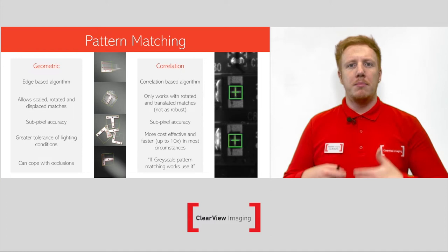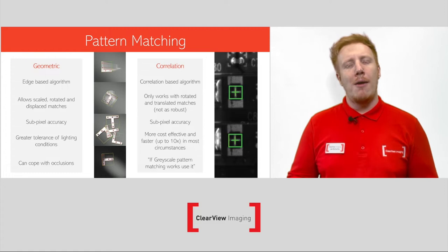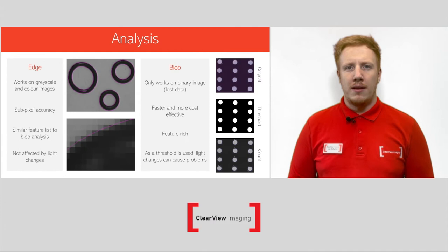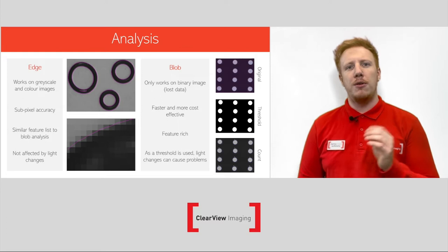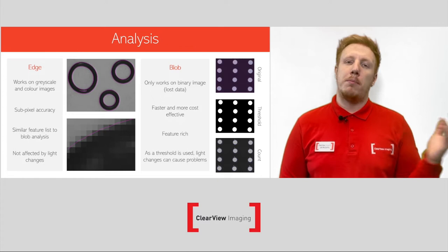The general rule is: if grayscale pattern matching works, then use it. This means you wouldn't have to pay for more expensive licenses or computational power. However, if your application has those restrictions, then you would have to move up to geometric. If you wanted to count pills in a foil packet or washers, you could use an analysis algorithm to do so. There are two main types: edge analysis and blob analysis.